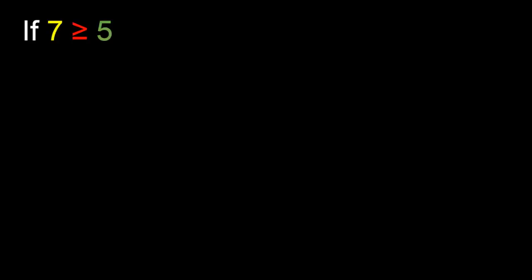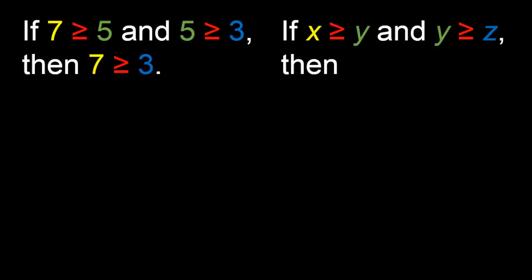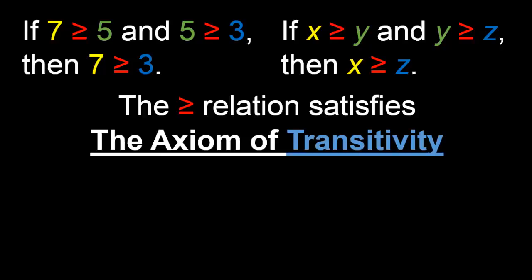We'll now talk about a second axiom: the axiom of transitivity. It will probably not surprise you to know that if 7 is greater than or equal to 5, and 5 is greater than or equal to 3, then we can conclude that 7 is greater than or equal to 3. More generally, if a number x is greater than or equal to y, and y is greater than or equal to z, then x is greater than or equal to z. We say that the greater-than-or-equal-to relation satisfies the axiom of transitivity.